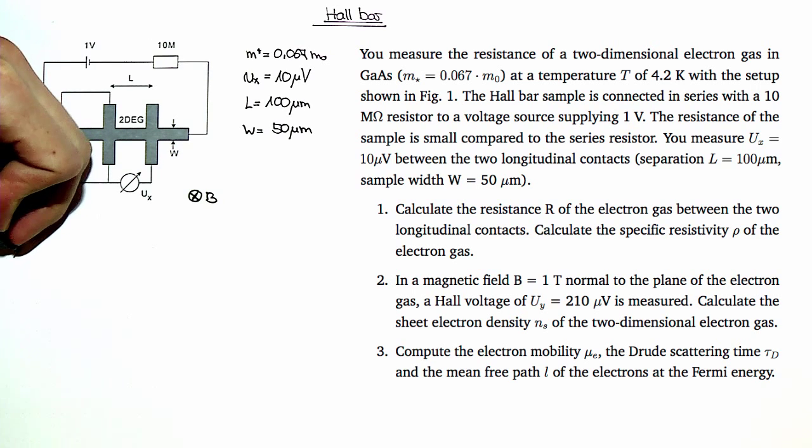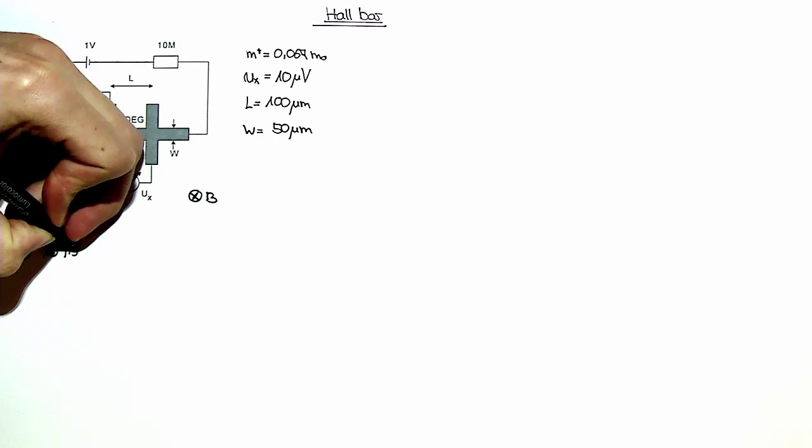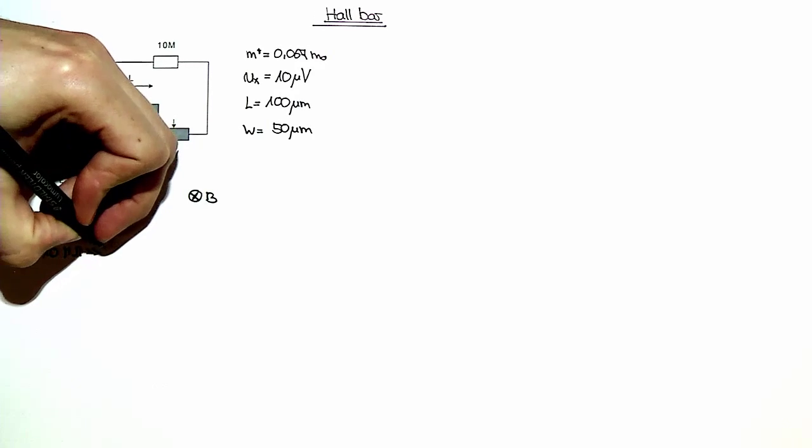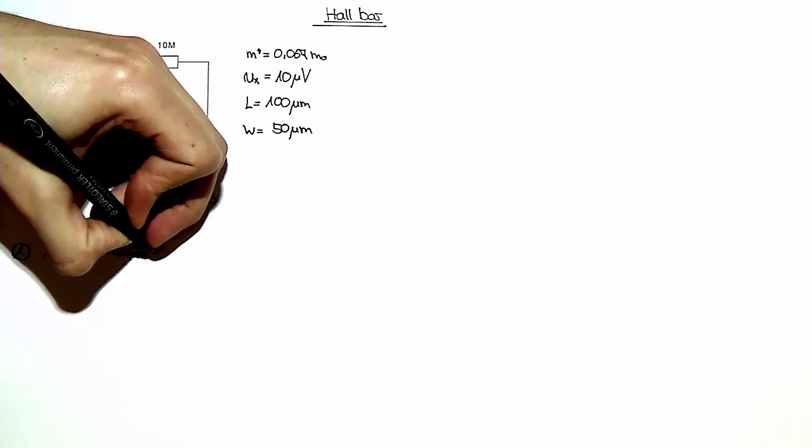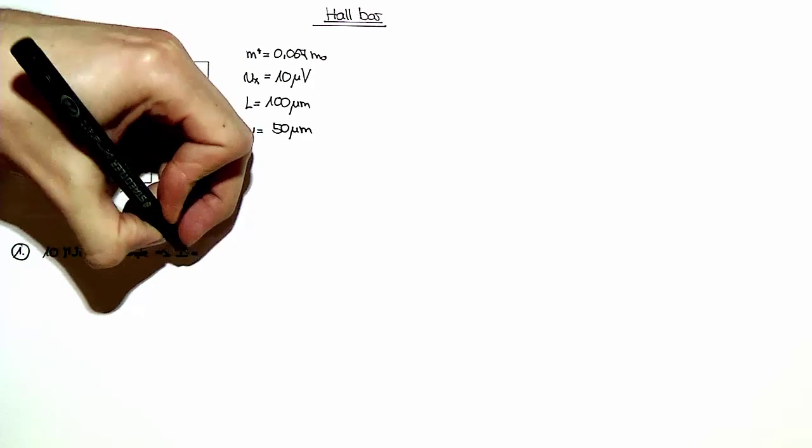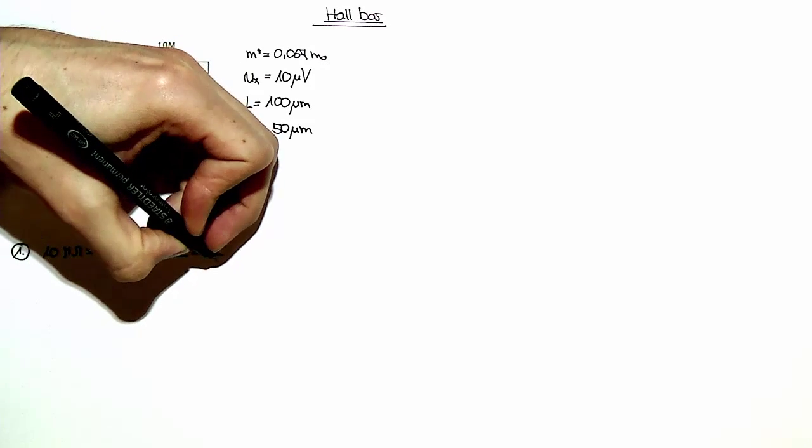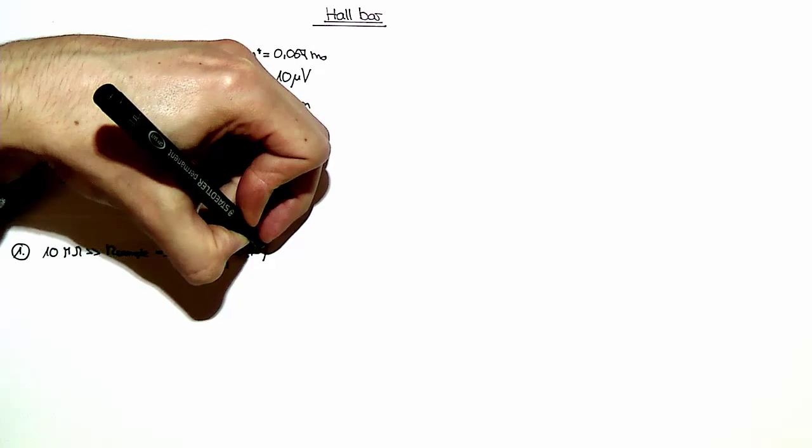First, we are asked to calculate the resistance R of the electron gas, as well as the specific resistivity rho. As I already mentioned, the 10 mega ohm resistor is much larger than the sample resistance. Therefore, the current is obtained as one volt over 10 mega ohms being 0.1 microamps.